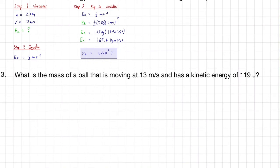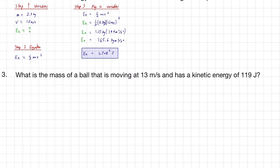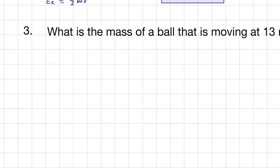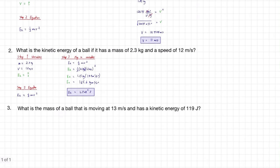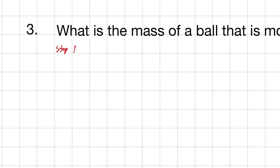So, in this last one, we want to know what is the mass of a ball that is moving at 13 meters per second and has a kinetic energy of 119 joules. Similar to the last two problems, it's going to be the same steps we're going to follow. Step one is to establish our variables.